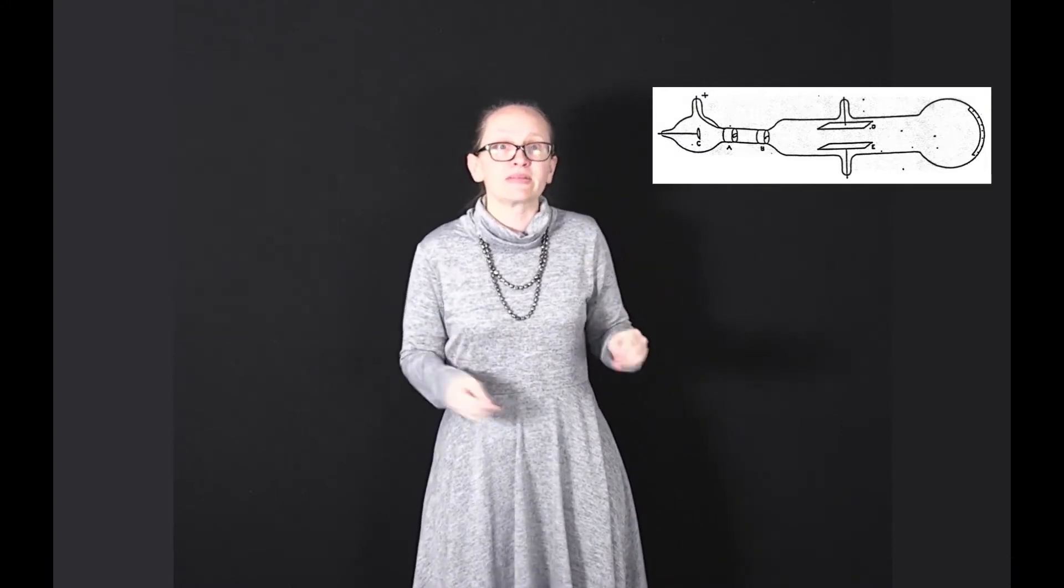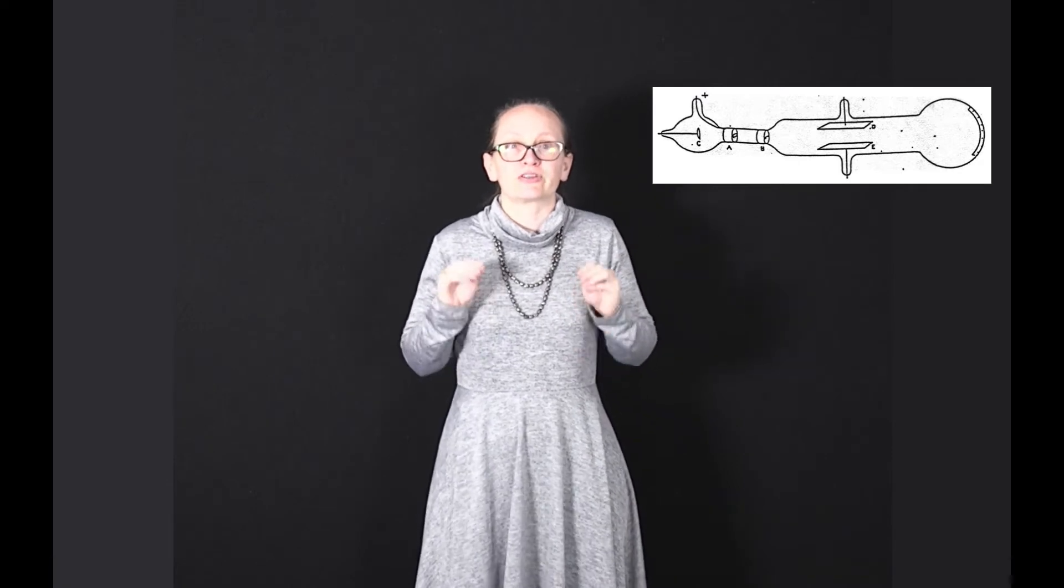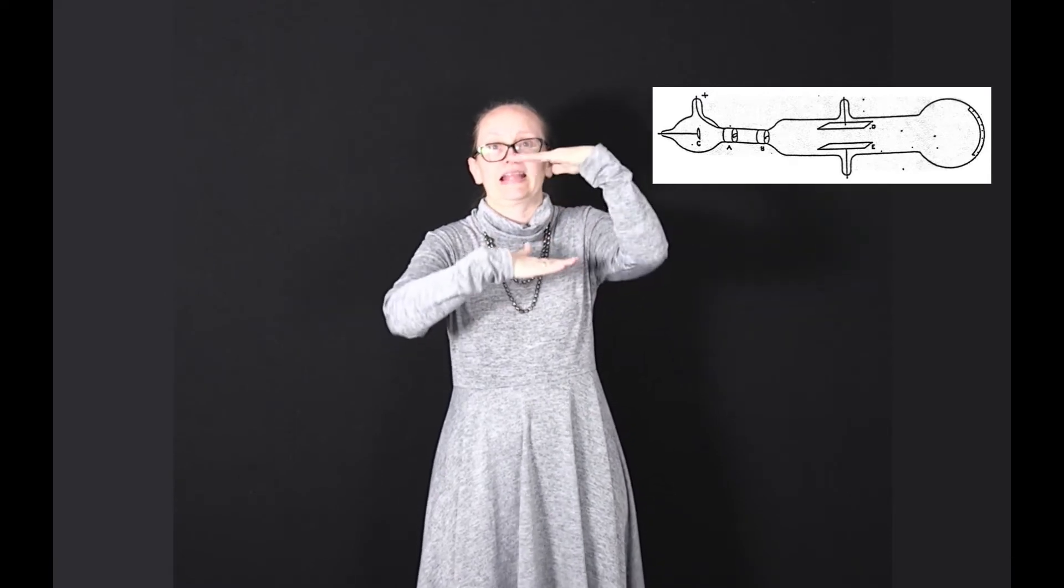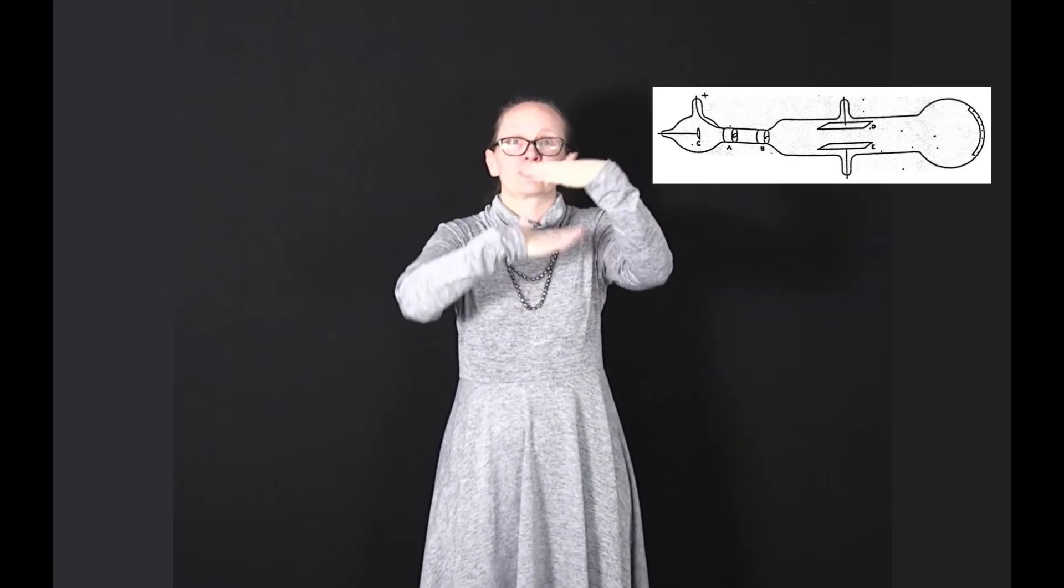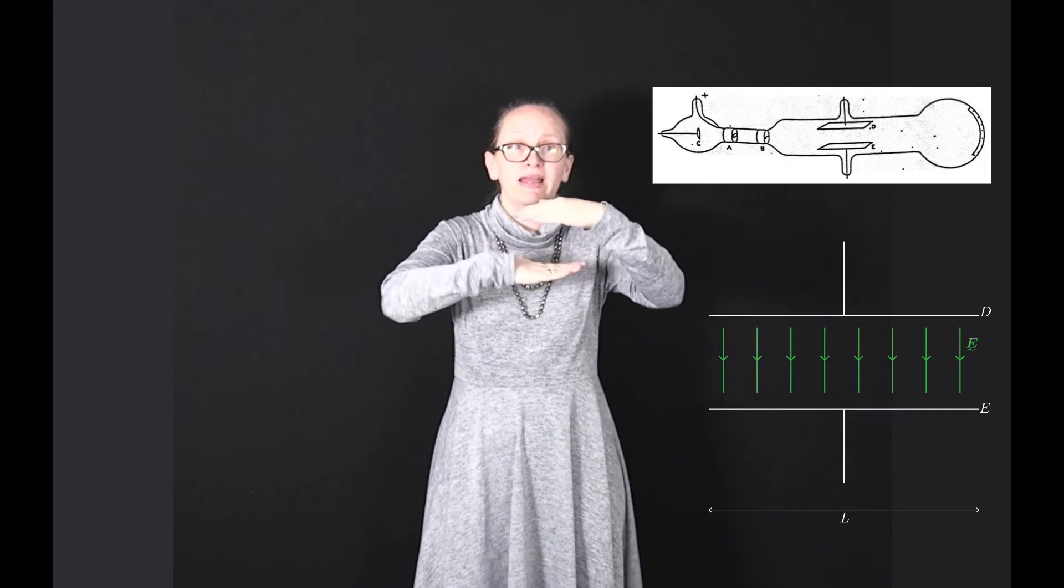Now in his really famous experiment shown here, Thompson applied a potential difference between two plates. In his diagram, these plates are shown as D and E. When he applied a potential difference between these plates, this established an electric field. When he shot cathode rays through it, there was a deflection due to the electric field between these plates.